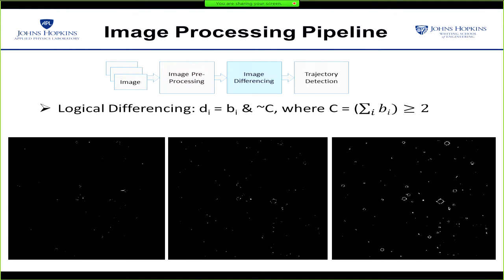We start off with some basic image processing, something like median filtering and dynamic thresholding to remove the noise, and we also do some image registration when required. This is followed by logical differencing with a common intersection image in order to get rid of all the stationary objects, like stars, in the background. If an object is present in at least two images, we consider it a stationary object. Since there are slight differences in exposure across the images, we do not get rid of all the background fully. As you can see in the rightmost image in the slide, there are crater-like artifacts around the stars, so this image clearly needs further cleaning up.